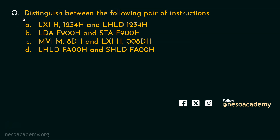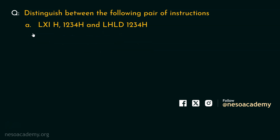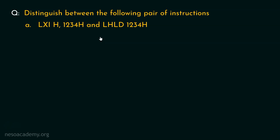We have one single question: we are supposed to distinguish between the following pairs of instructions. There are four pairs. Let's begin with the first one — LXI H,1234H and LHLD 1234H. We are being asked to distinguish between these two instructions.